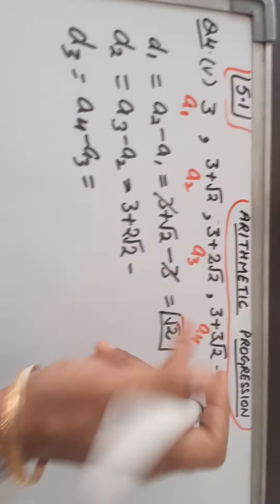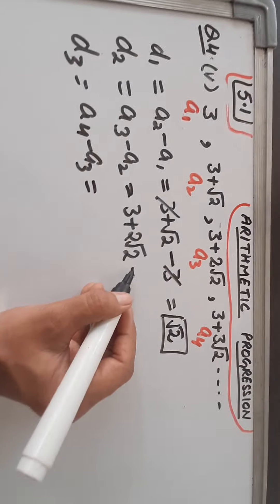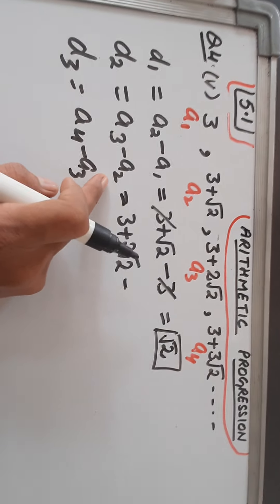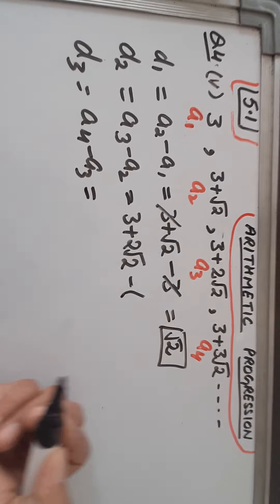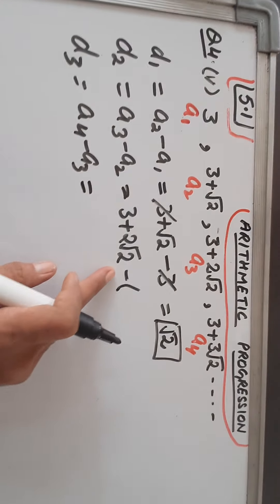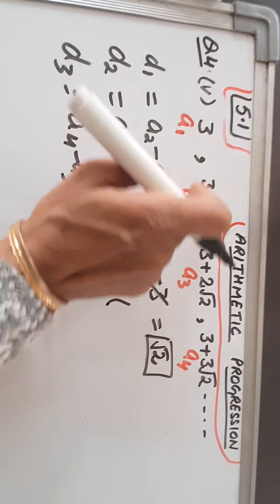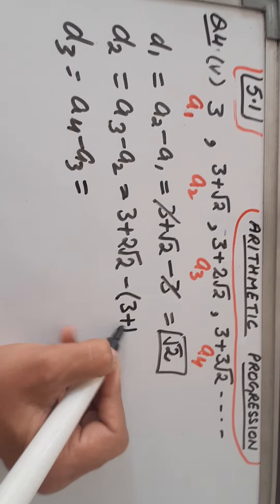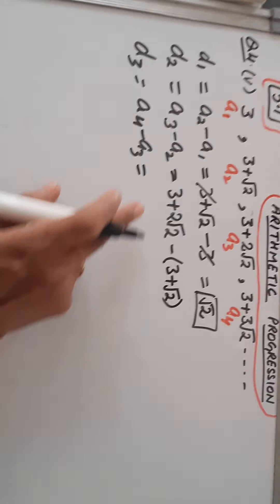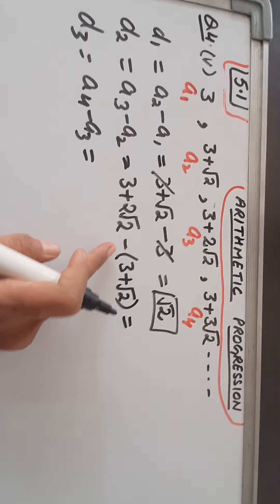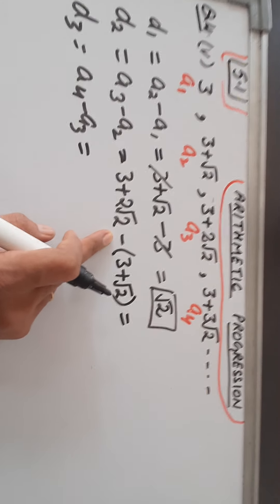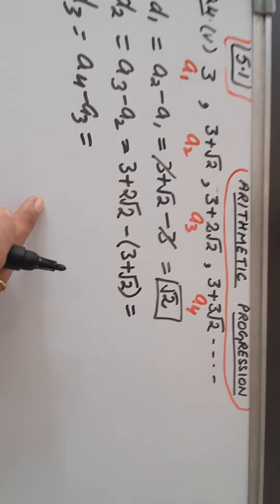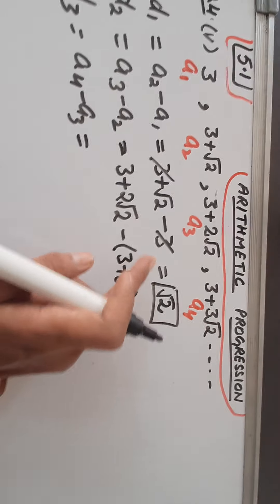So when you place the negative sign and put A2, place it in the bracket because A2 is a binomial — 3 plus root 2 carries 2 terms. When we open the bracket, because the negative sign is outside the bracket, the sign of both terms will change. If you do not place the bracket, only the first term would become negative.